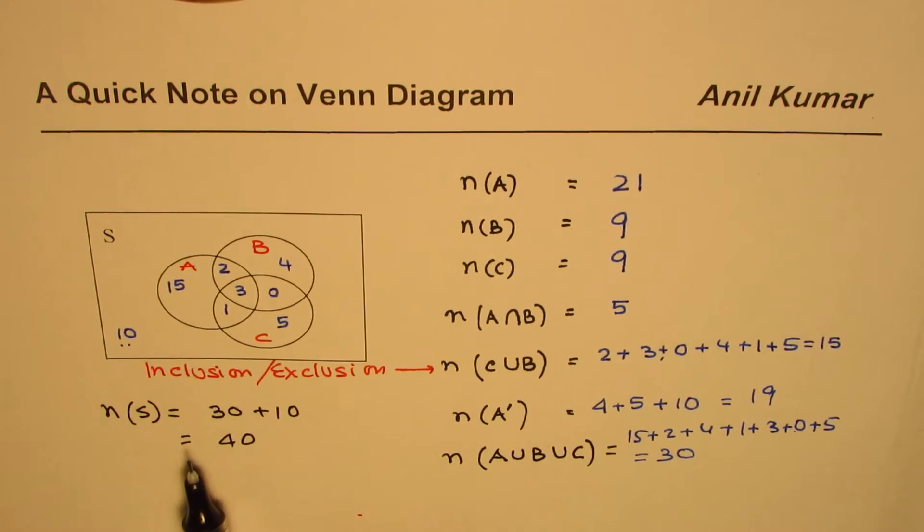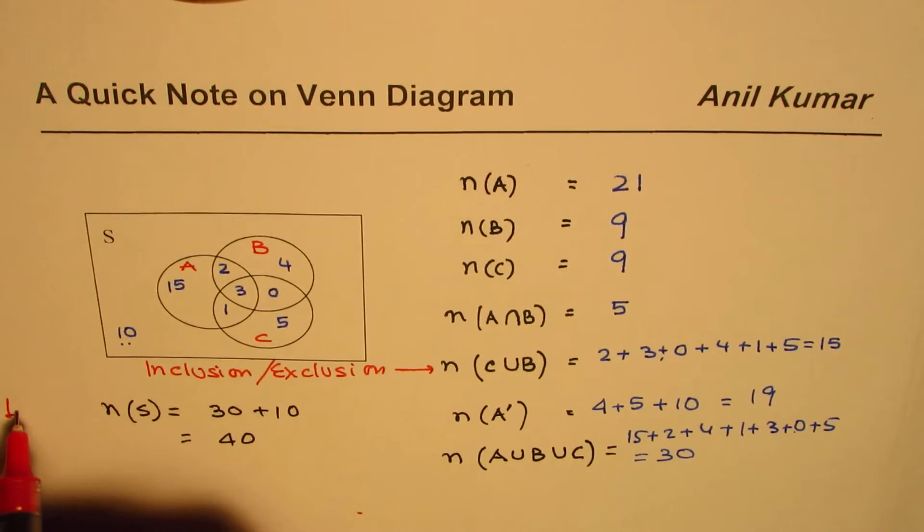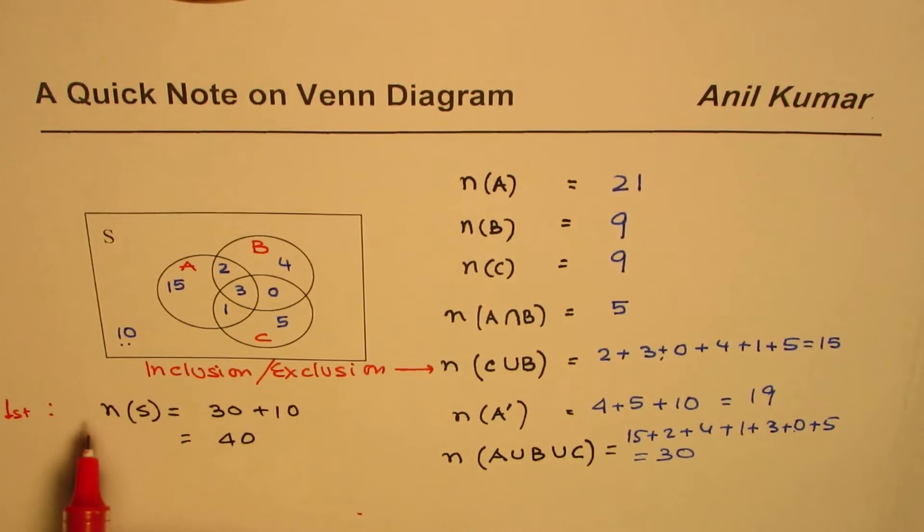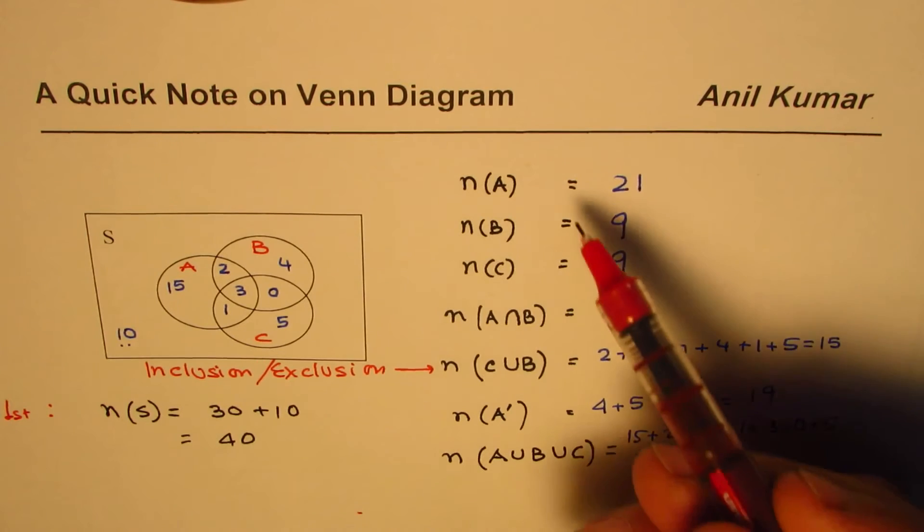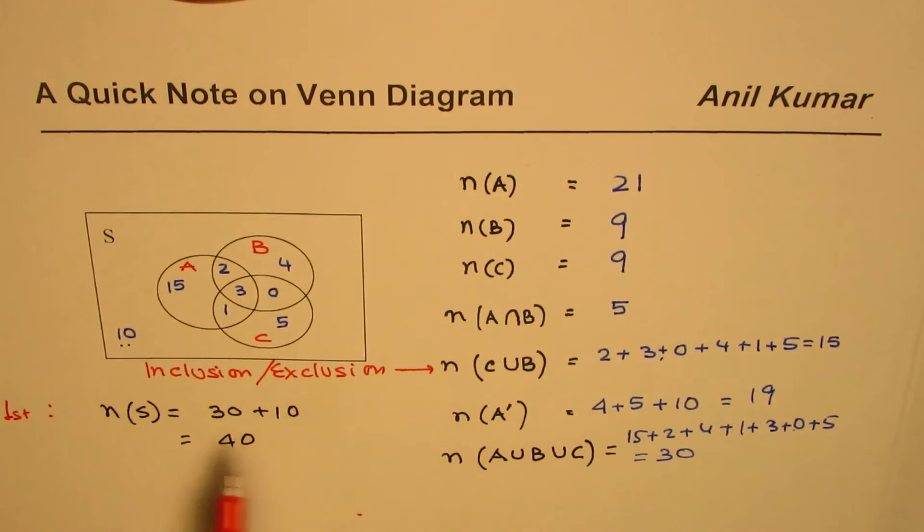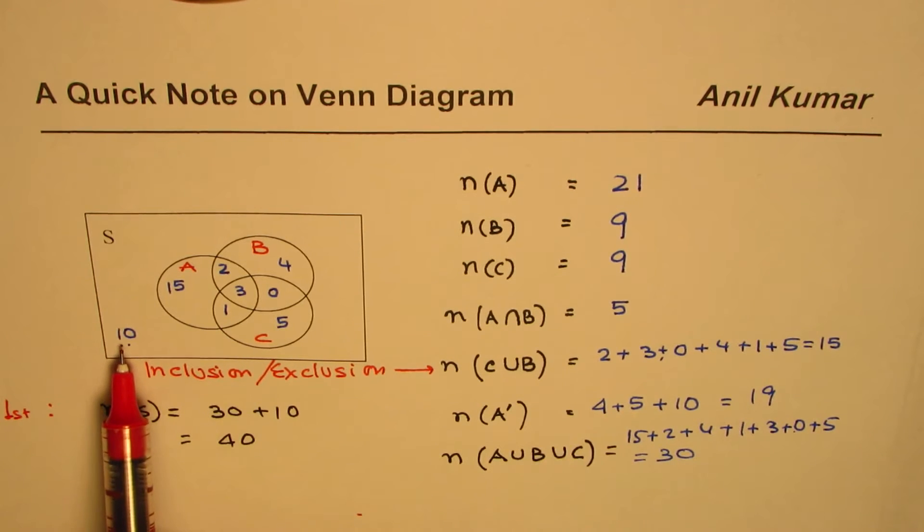That is how you should look into Venn diagrams. Purposely I kept this outside as my last option, but truly speaking, this is the first thing you should do: find the number of elements in the sample space even before getting in there. If you do this, then you ensure that you don't miss out this number 10 and don't make a mistake.